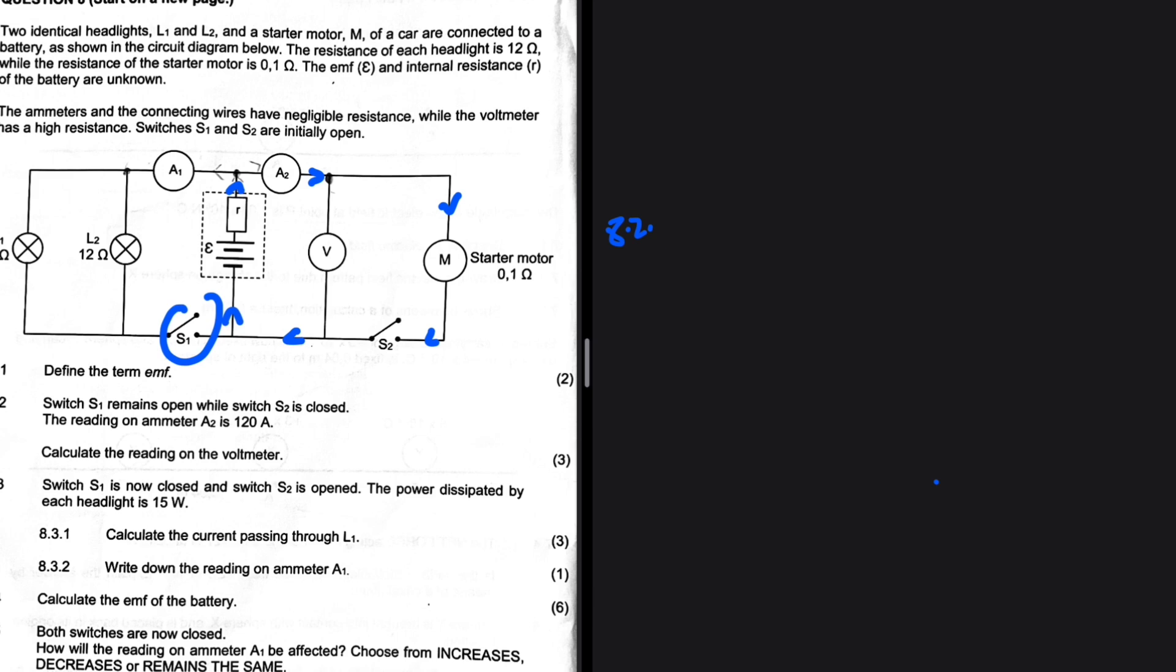All the current will turn at that point, and then this is what we're actually going to have if S1 is open. So we're looking for the reading on the voltmeter. The voltmeter is connected across the starter motor, which is the only external component we have, which is the only resistor that we have. So V is reading V external. So V will be equal to I multiplied by R. The current is 120. The resistance is 0.1. So V is equal to 12 volts. That is 8.2.